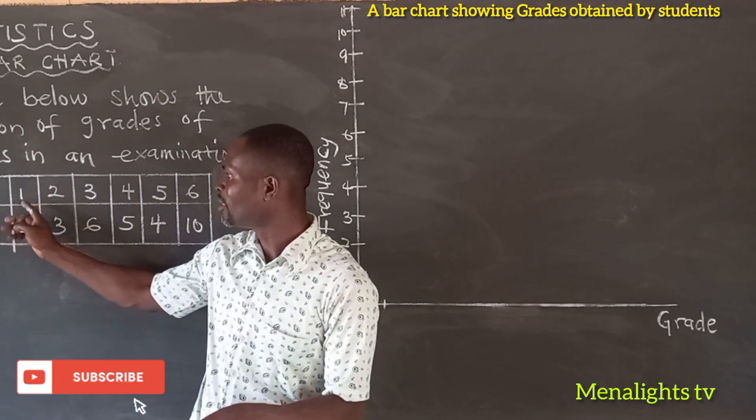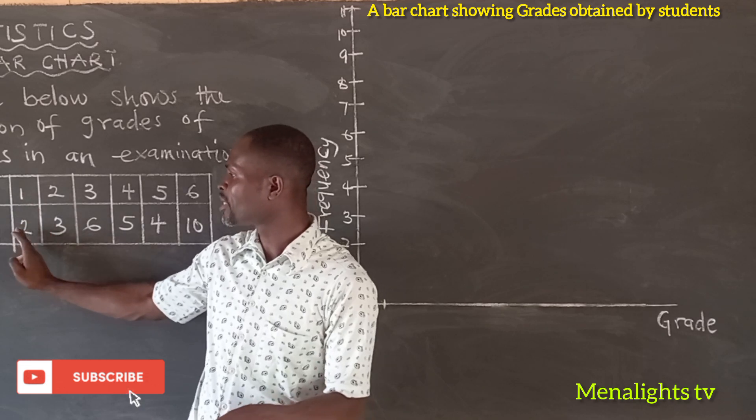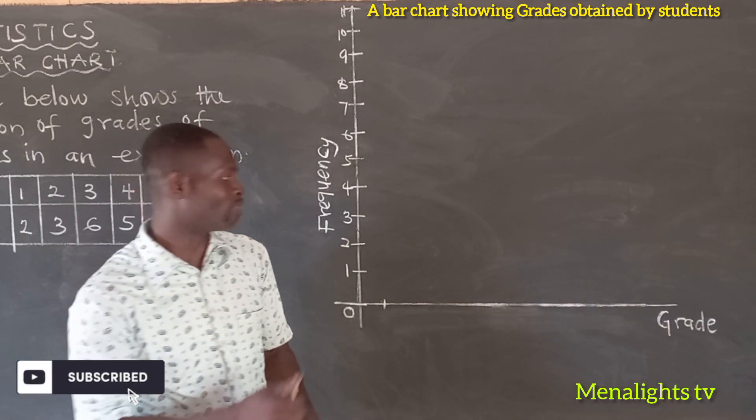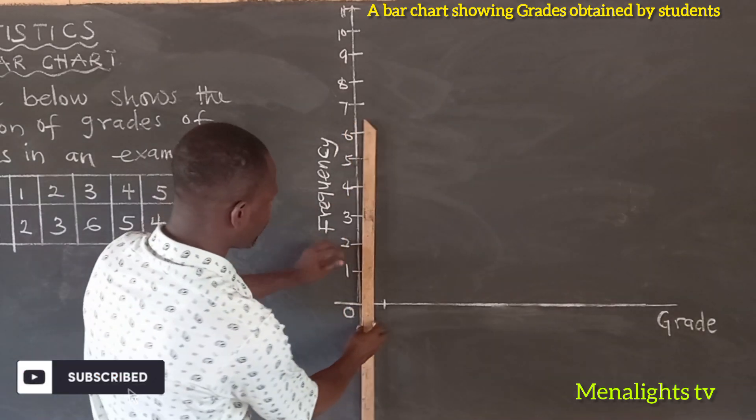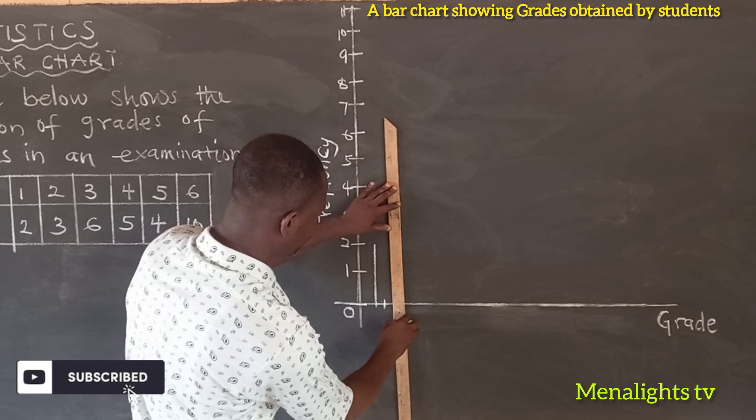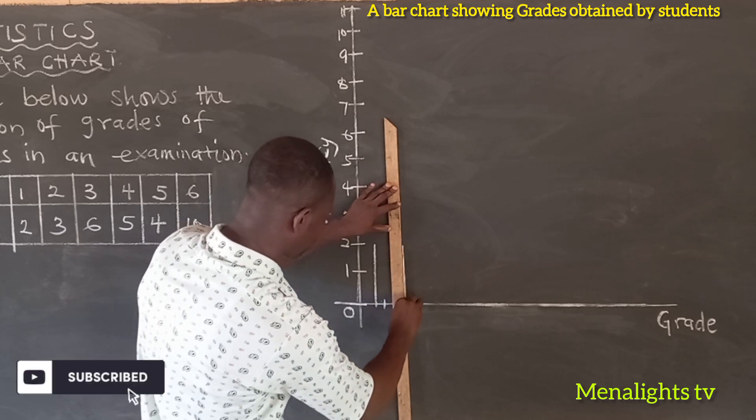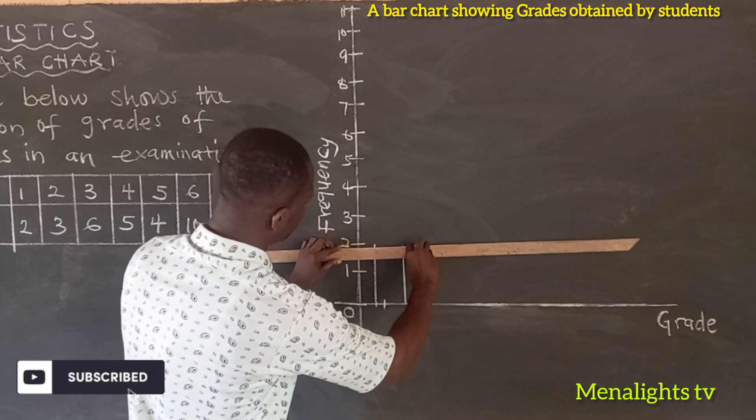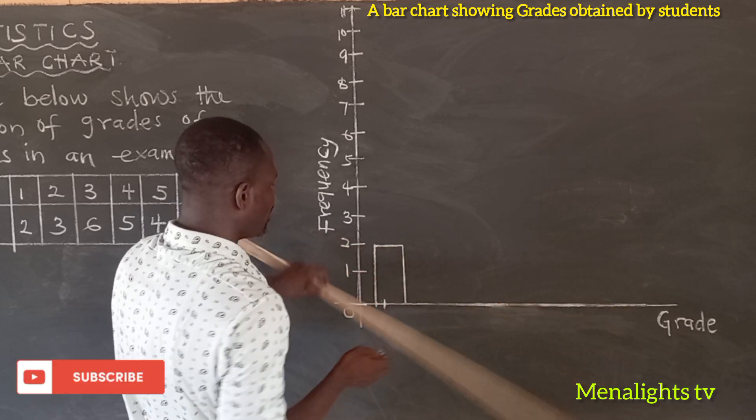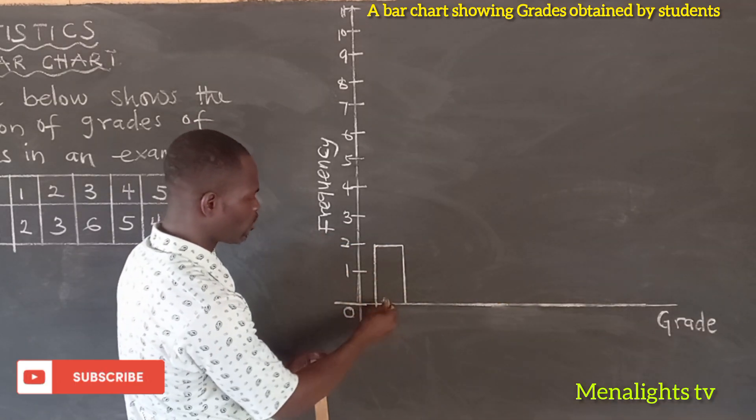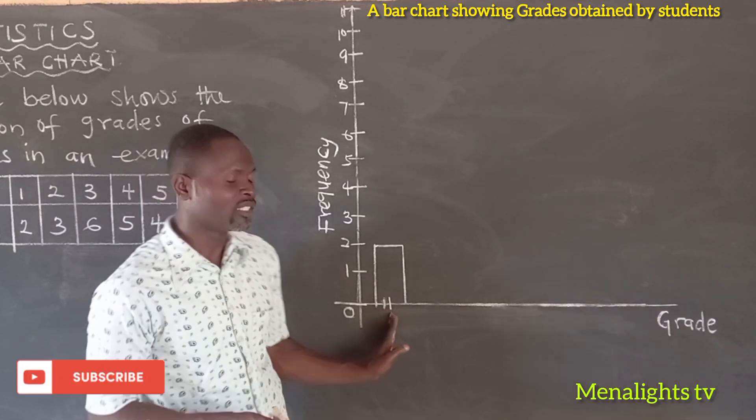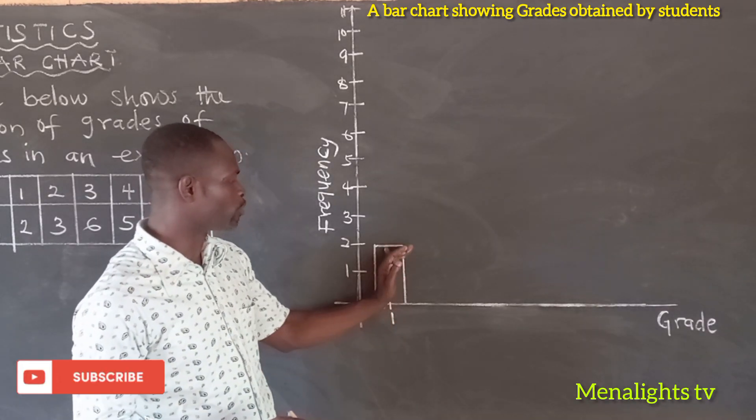When we look at grade 1, grade 1 is having a frequency of 2. That means only 2 people obtain that grade. So we stand here, we draw, up to 2. And this is our grade 1. So we put the 1 here as grade 1. This grade 1 is having a frequency of 2, meaning 2 people obtain that grade.